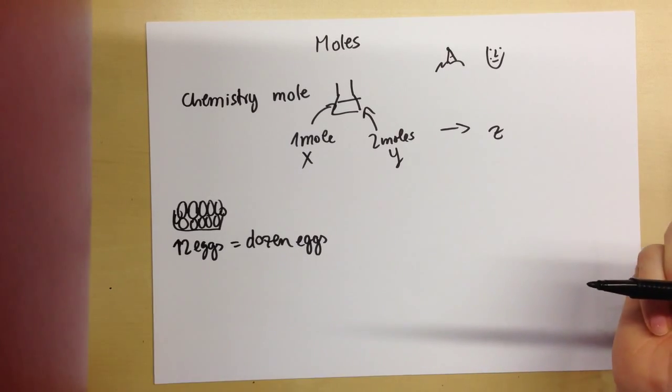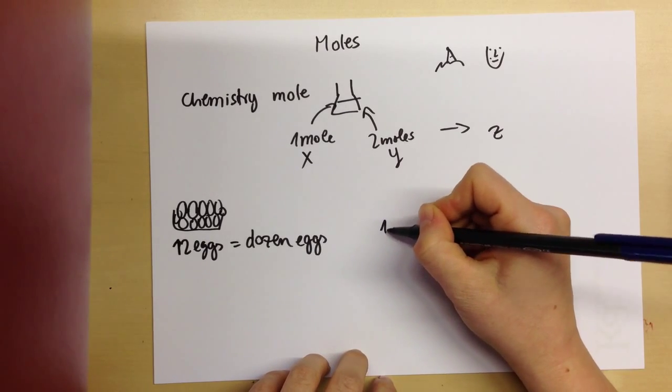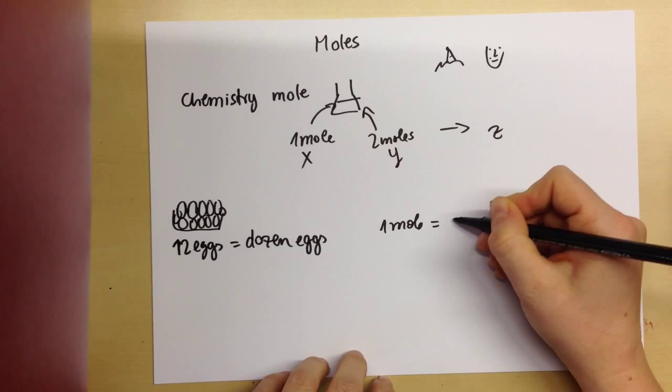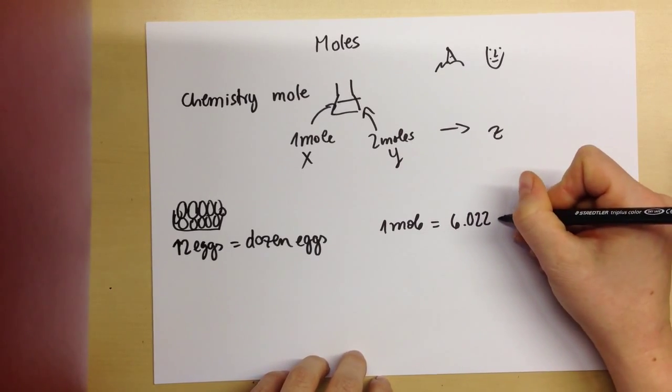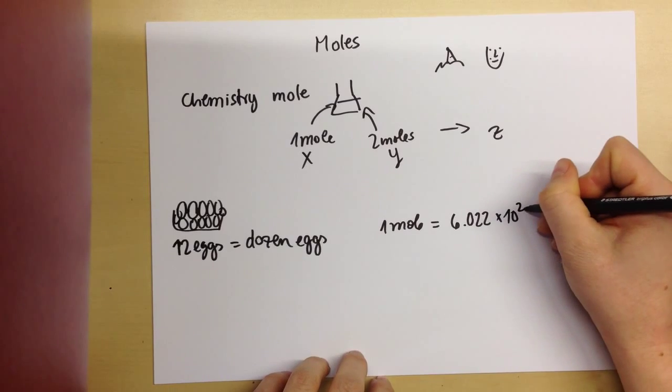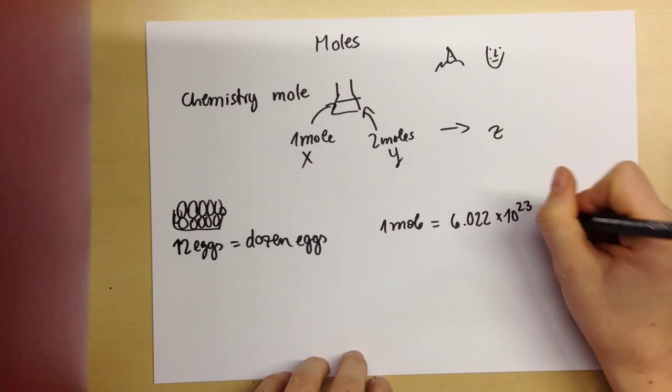And a mole is nothing different except the number is a lot larger. So one mole equals 6.022 times 10 to the power of 23.